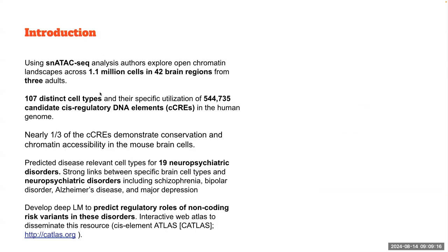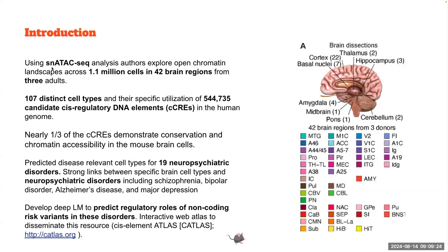I'll start with a short introduction. The authors use single-cell, single-nuclei ATAC-seq analysis to explore open chromatin landscapes across 1.1 million cells in 42 brain regions. These include seven regions for the basal nuclei, 22 for the cortex, two for the thalamus, three for the hippocampus, two for the cerebellum, one for the pons, one for the brainstem, and four for the midbrain.